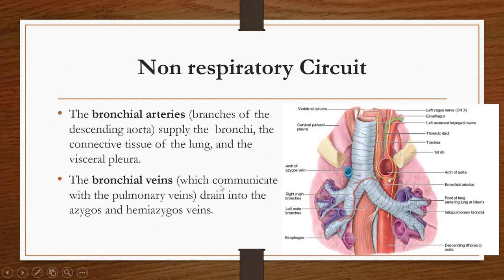The bronchial veins communicate with the pulmonary veins and also drain into the azygous vein and the hemiazygous vein. The azygous vein is present on the right side and the hemiazygous vein on the left side. So remember: bronchial veins drain into the azygous and hemiazygous veins. Bronchial arteries are branches of the descending thoracic aorta, and bronchial veins communicate with the pulmonary veins but drain into the azygous and hemiazygous veins.